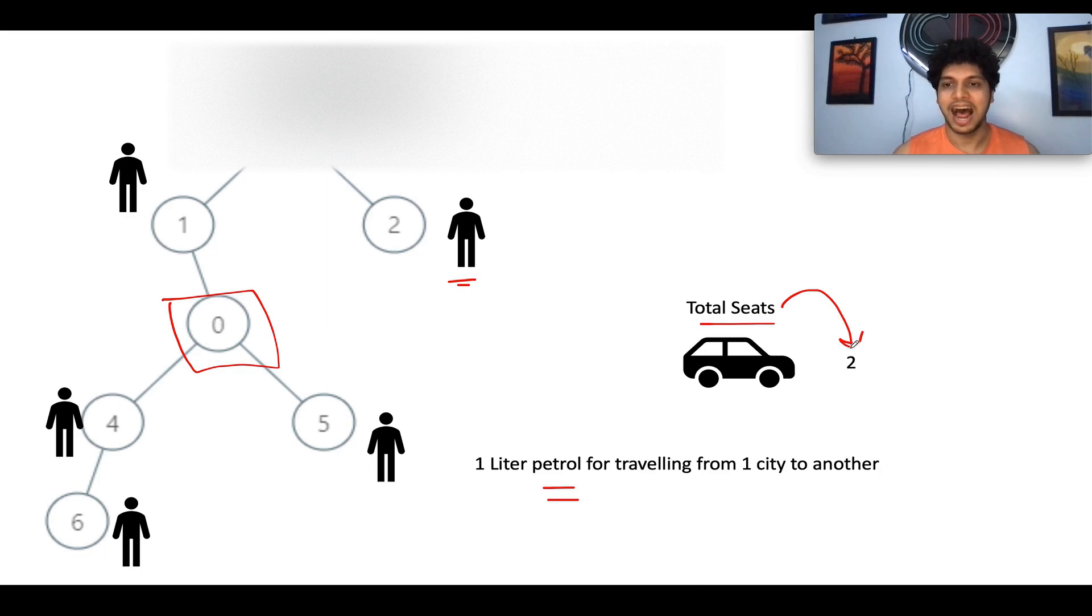That means at max in one single trip, you can carry only two passengers. If there are more passengers at any particular city, multiple trips will be taking place. Let's divide this problem into a sub problem and then we will look at this entire example.